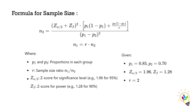The formula for this type of problem uses p1 as the proportion of the first group, p2 as the proportion of the second group, r as the sample size ratio, z-alpha/2 as the z-score for the significance level, and z-beta as the z-score for power.